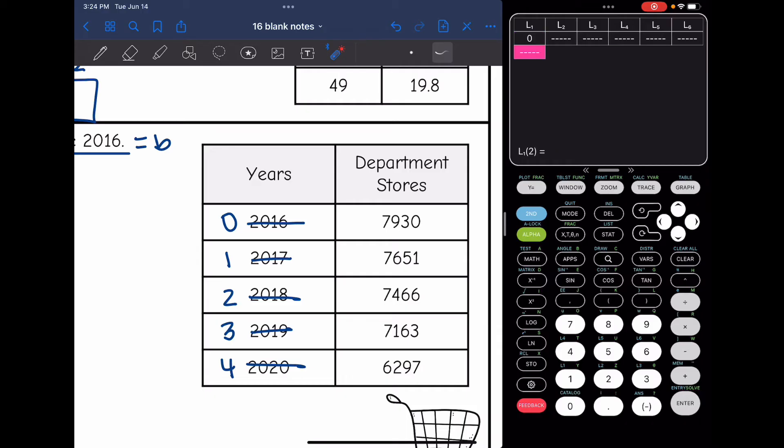So it's 0, 1, 2, 3, 4, and then 7,930 for when we started looking at this data. Then 7,651, 7,466, 7,163, and 6,297.